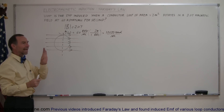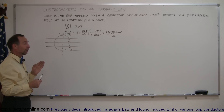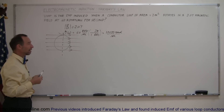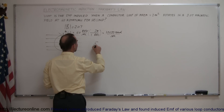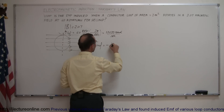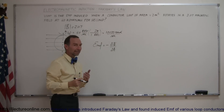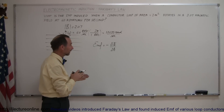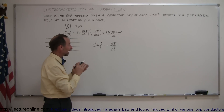Since the area of the loop is changing in a non-uniform way, we'll have to find a way to calculate the EMF. Going back to our definition, the EMF induced is equal to minus the change in the flux over time, and the flux can be calculated by multiplying the magnetic field strength times the area.